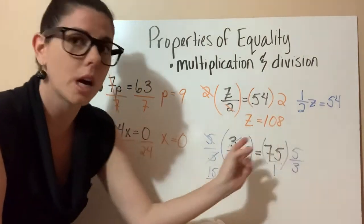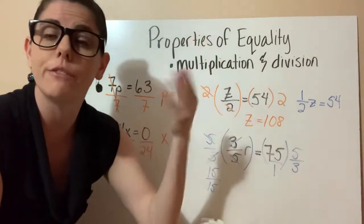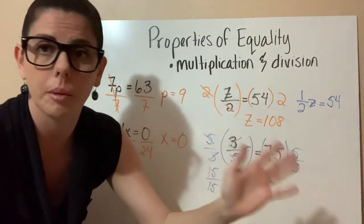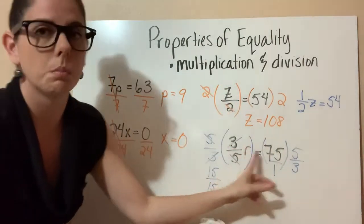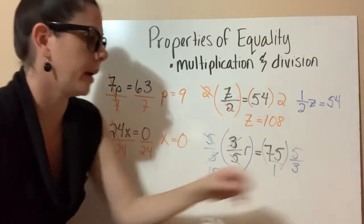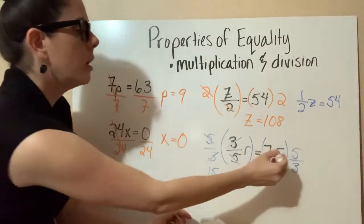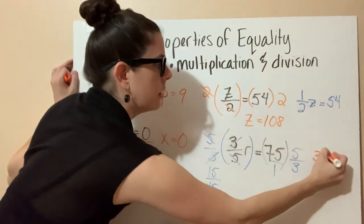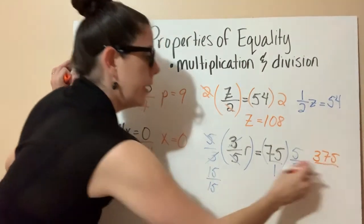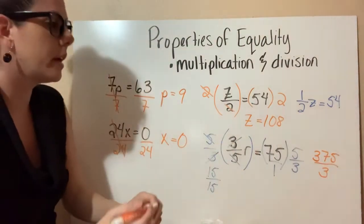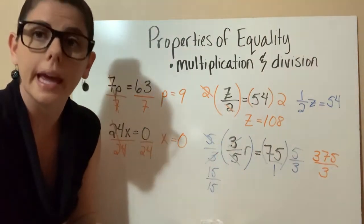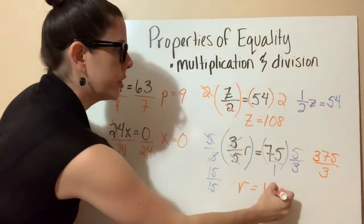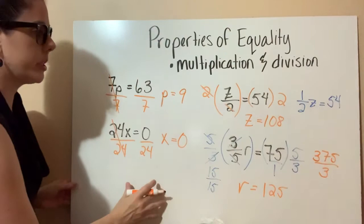Multiplying fractions is the easiest operation — just multiply across the top and multiply across the bottom, then simplify if you can. You don't need a common denominator and you don't need to flip anything. So 75 times 5 equals 375, and 1 times 3 is just 3. So 375 divided by 3 — reducing that gives us r equals 125.